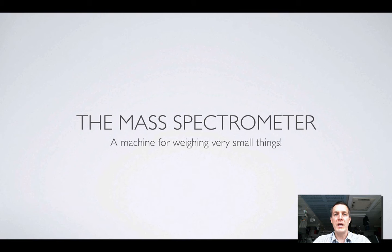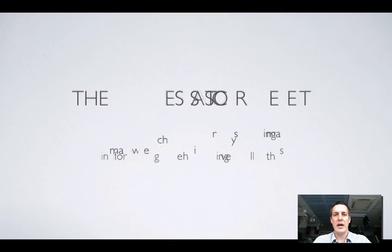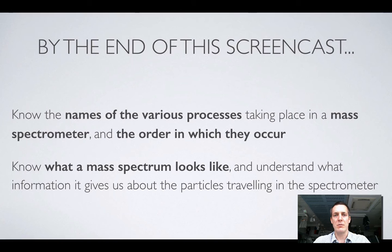because one of the main uses of these things is to allow us to determine what proportions of different isotopes there are of an element in a sample of that element. So we're not going to look at how we get to that information from a mass spectrometer in this film, that will come up in the next film, but here we're going to look at how the machine actually works.